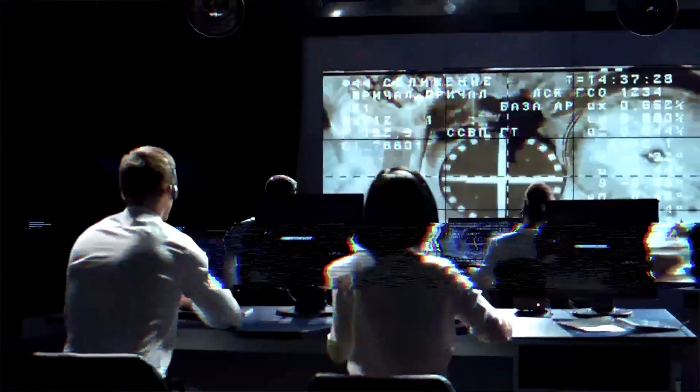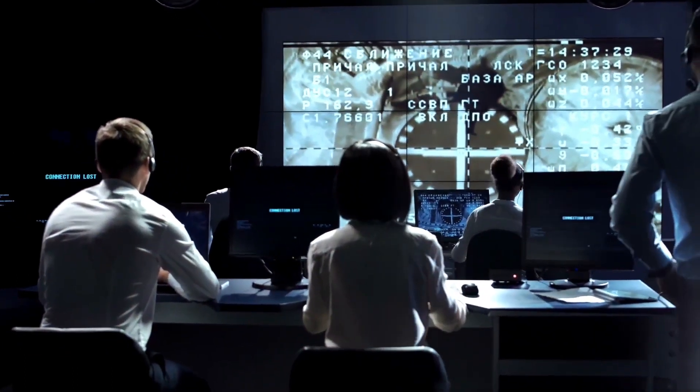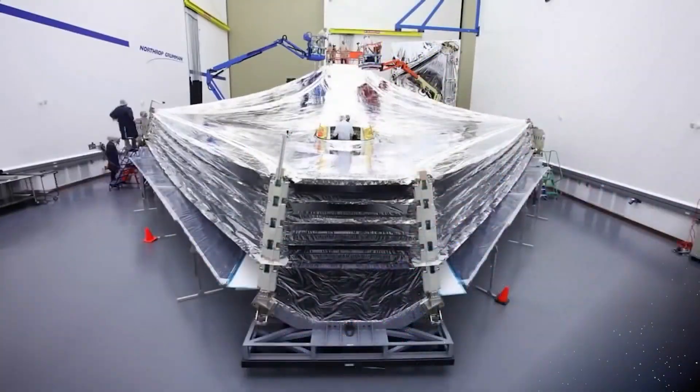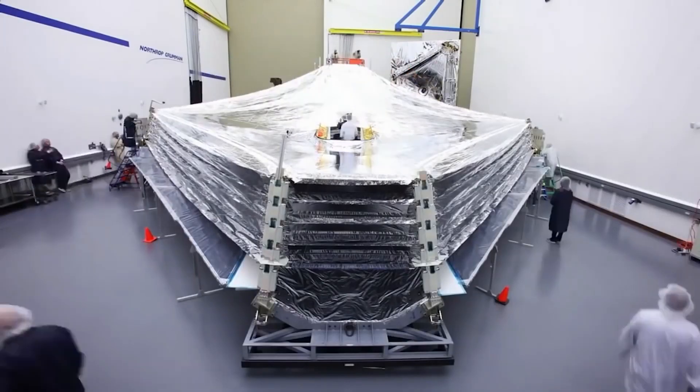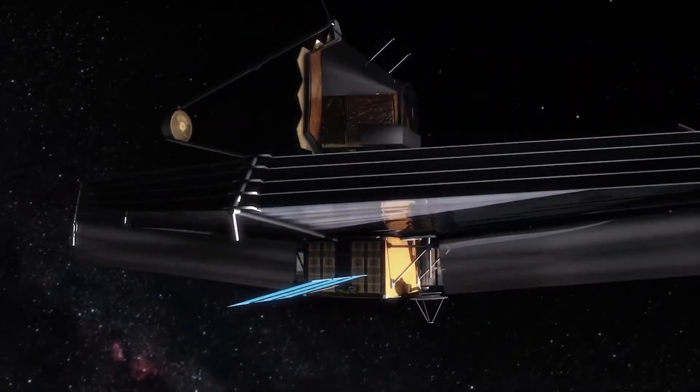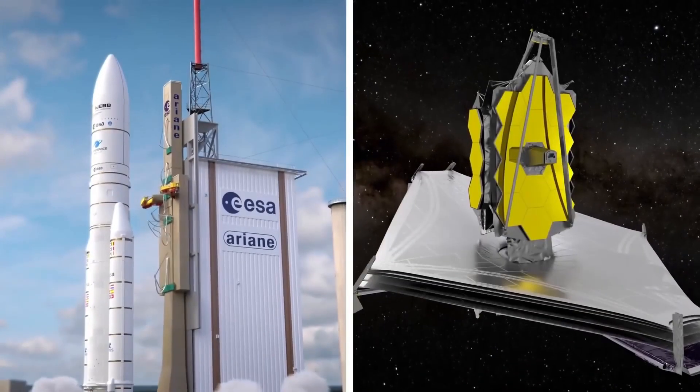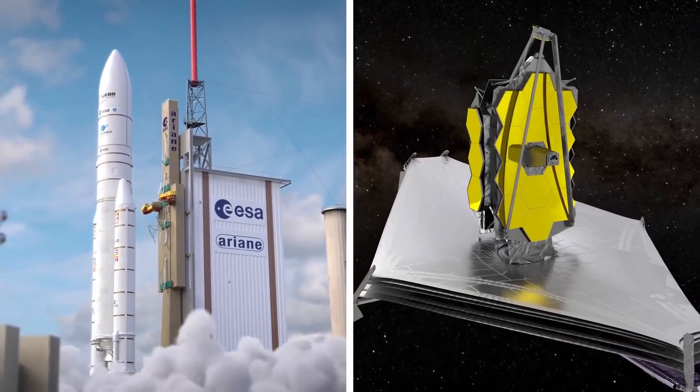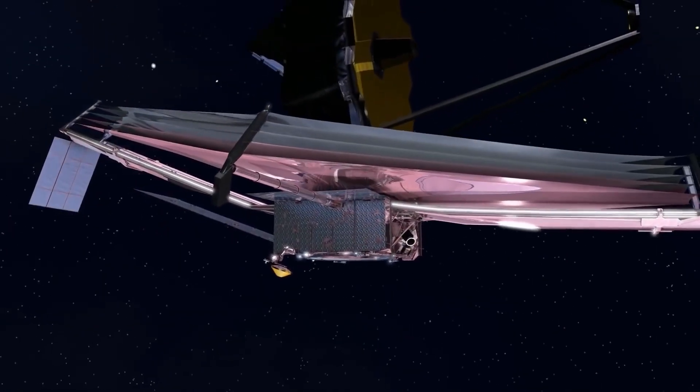The Webb telescope has to be kept cold to operate correctly. A five-layer sun shield the size of a tennis court enables it to do that. When Webb took off on Christmas Day, this mechanism was folded up, but less than two weeks later the fragile layers of the shield were successfully deployed.